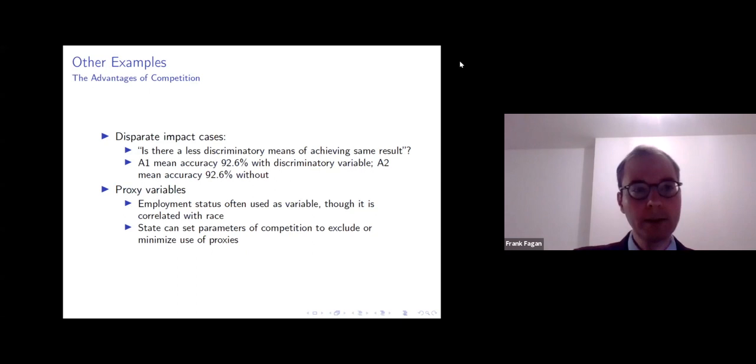In terms of employment, if there's any employment discrimination attorneys in the virtual room here, you can think of the third prong of classic disparate impact cases where the court asks, is there less discriminatory means of achieving the same result? So if we go back to mean accuracy and how it's computed with the algorithm, maybe the first algorithm is able to achieve a 92.6% accuracy rate with a particular specification that includes a discriminatory variable. Well, of course, if the defendant can offer an algorithm without that discriminatory variable and achieve the same result, then that defendant would prevail on the third prong of a disparate impact case.